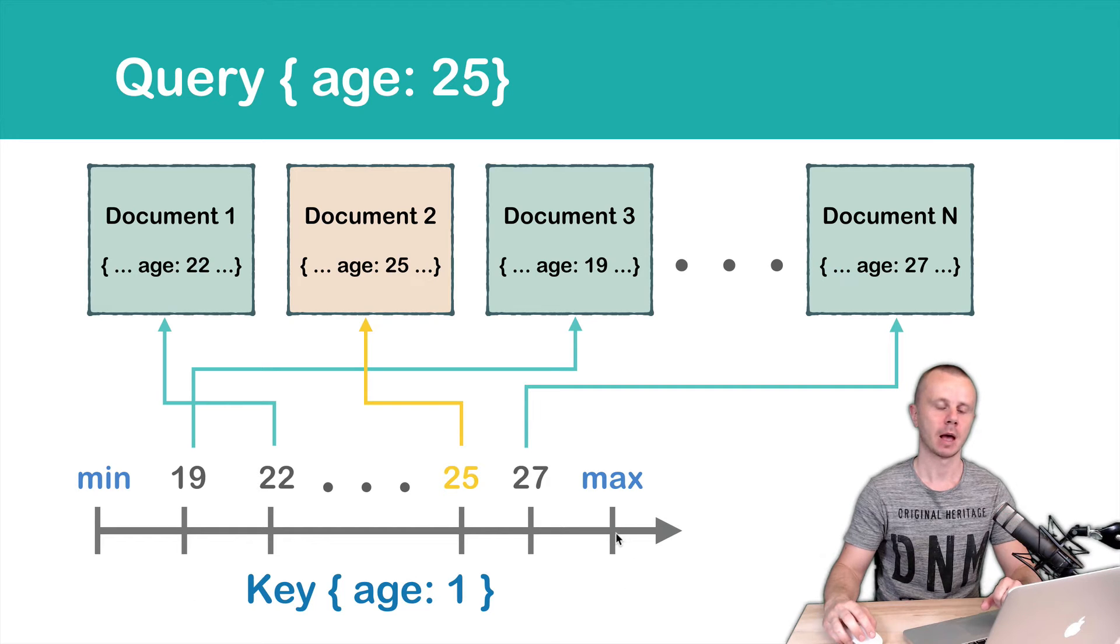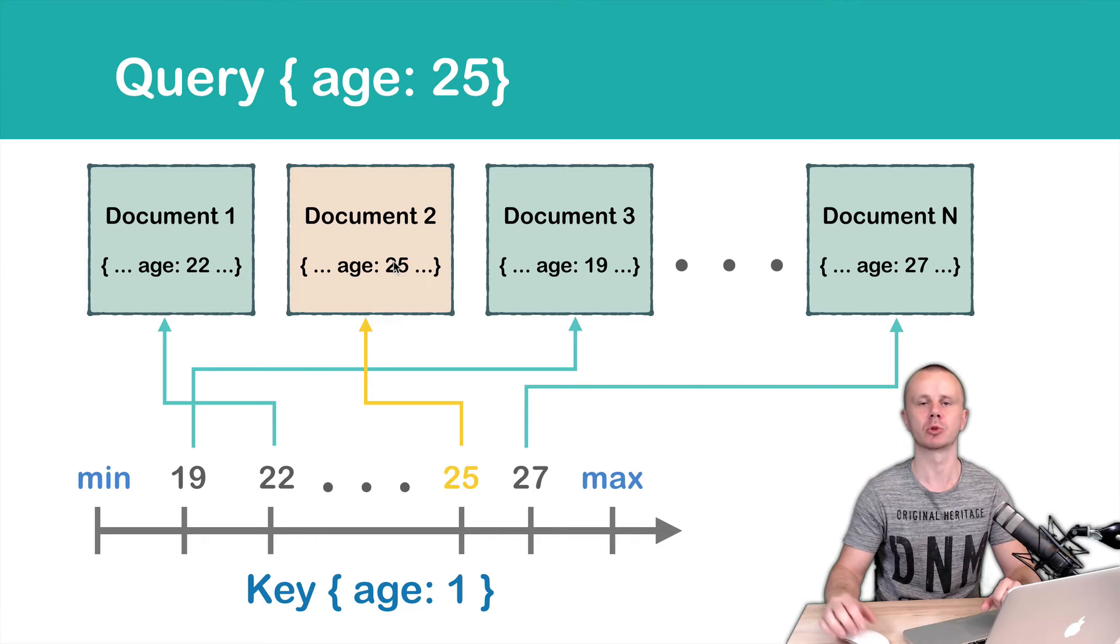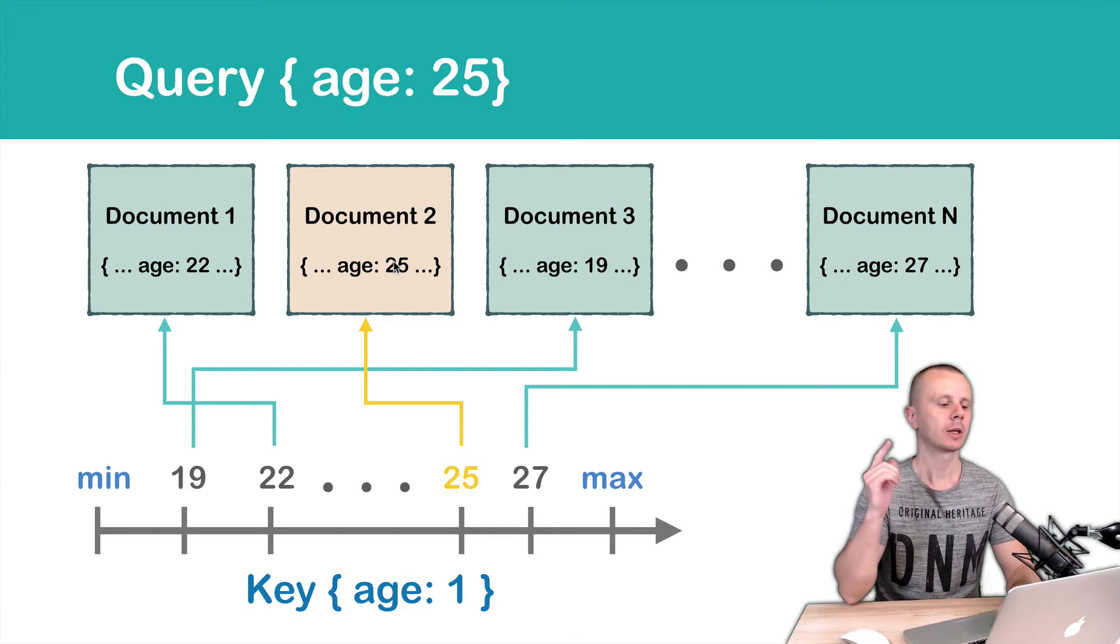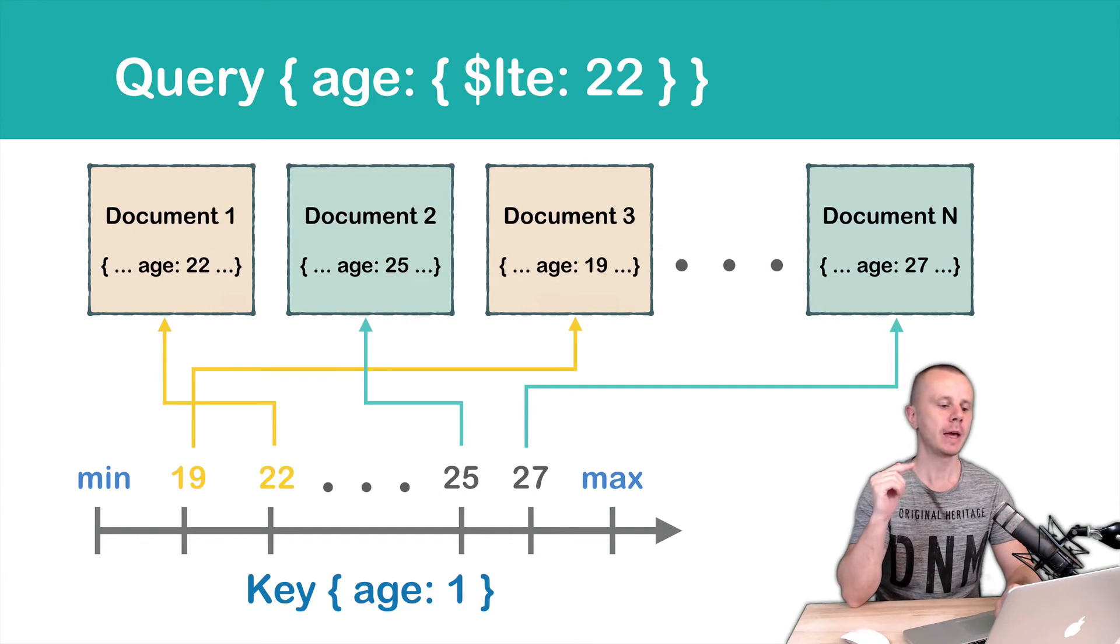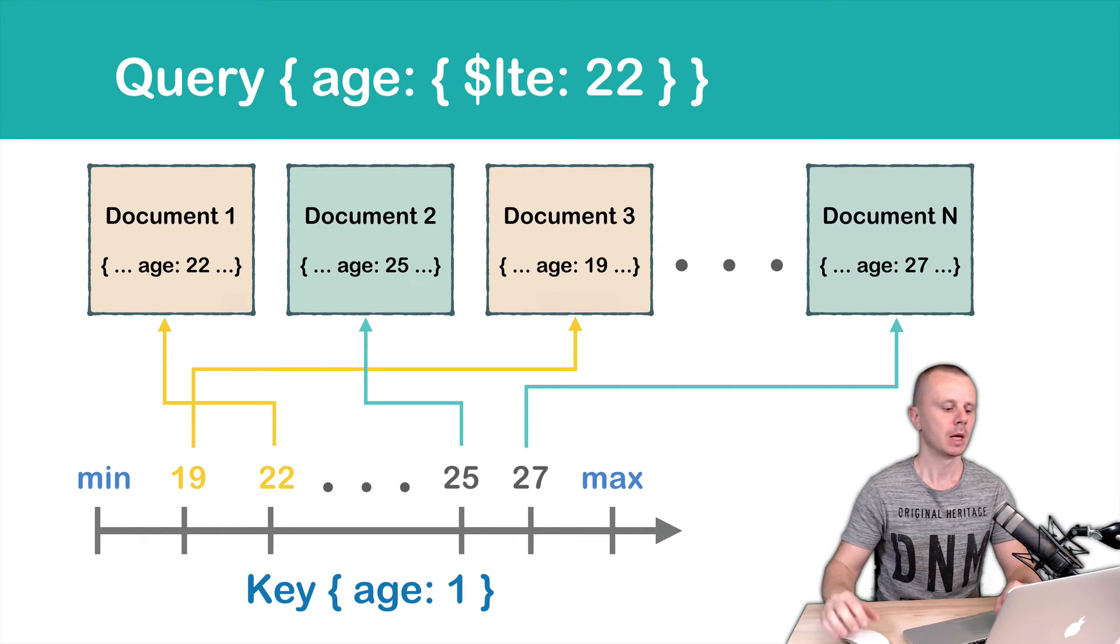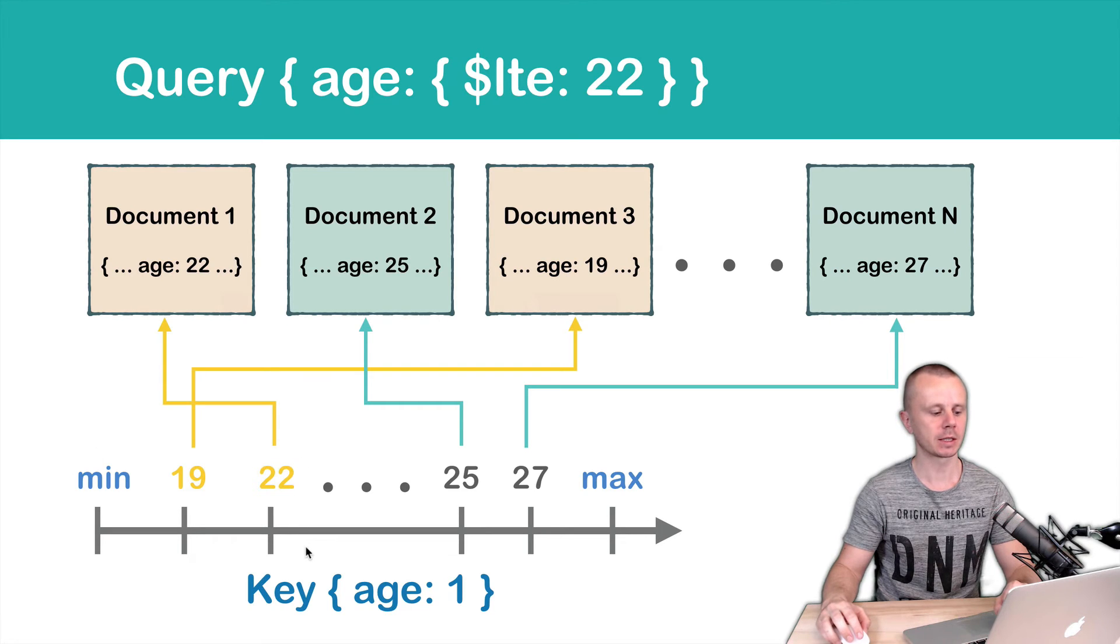When the result is found, we retrieve documents and send them to the client. Next query example: age less than or equal to 22. In this case, we get the left part of the index that is less than or equal to 22.